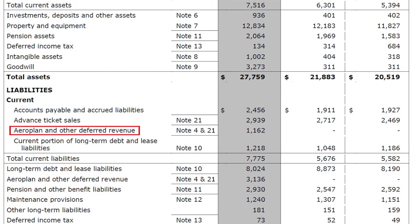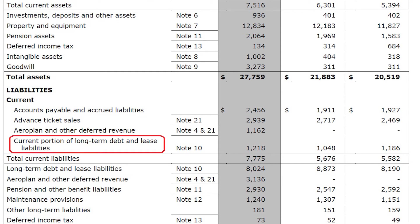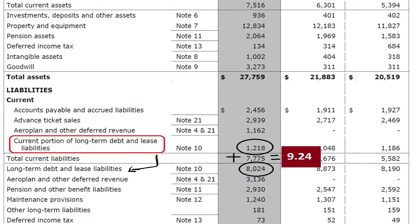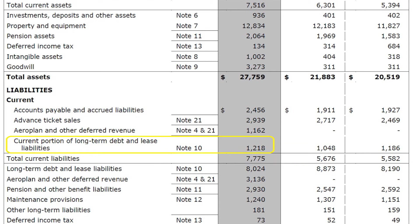Aeroplan and other deferred revenue is loyalty program revenue lost — the total amount of discounts given to customers for Aeroplan and other loyalty points. There is also the current portion of long-term debt and lease liabilities of 1.2 billion dollars. Under non-current liabilities, long-term debt and lease liabilities total 8.2 billion dollars, so total debt is 9.2 billion, of which only 1.2 billion is due within the next 12 months.